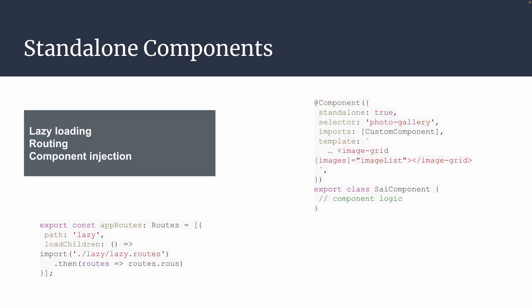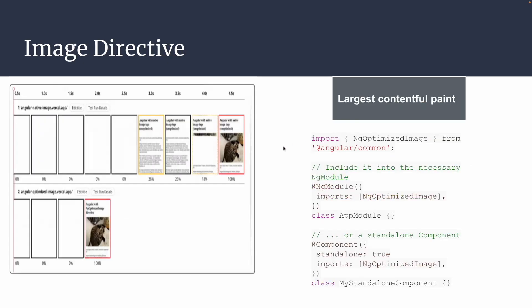Looking at standalone components in detail: lazy loading, routing, and component injection have been introduced. You can create your routes and use them directly for your app routes to load a component. Here you can see a standalone component with imports of a custom component — an image grid custom component injected in the standalone template. This way standalone components can be used without depending on modular components.